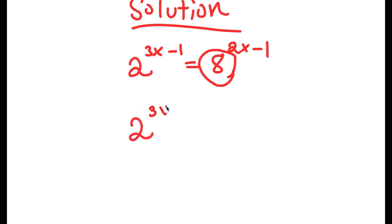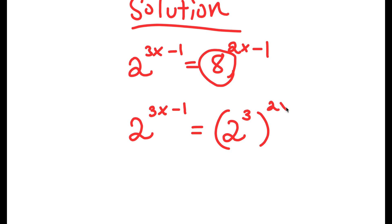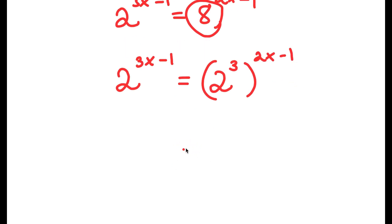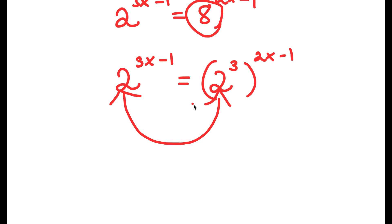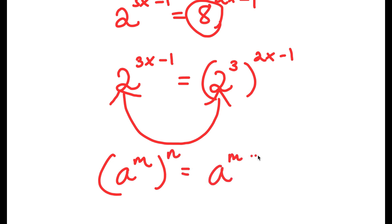So now I have 2 to the power of 3x minus 1 is equal to 2 to the power of 3, to the power of 2x minus 1. The reason I did this is because now both sides have the same base of 2, which makes it much easier to solve. If I have something in the form a to the power of m to the power of n, this equals a to the power of m times n.